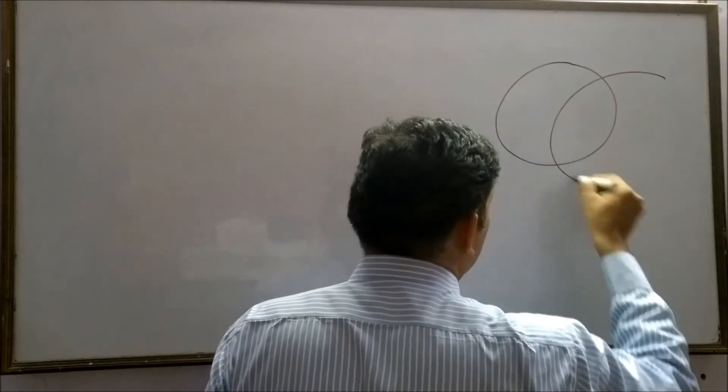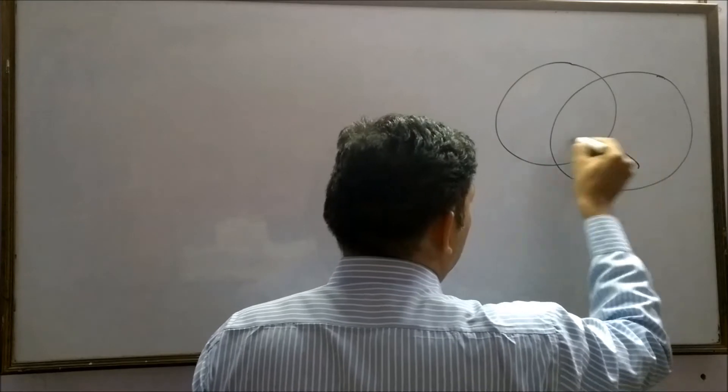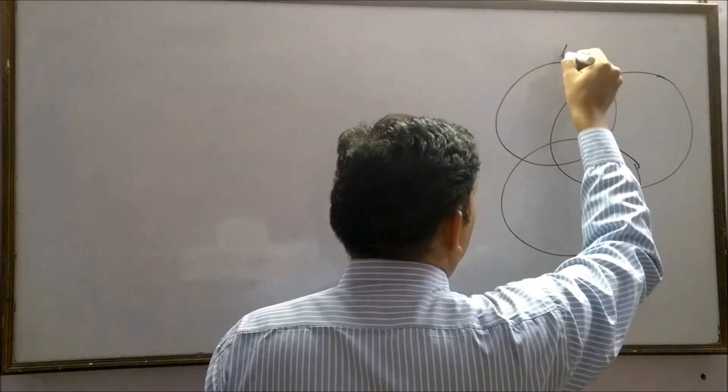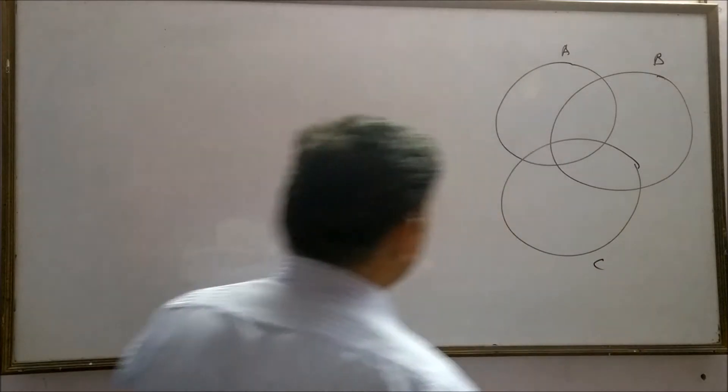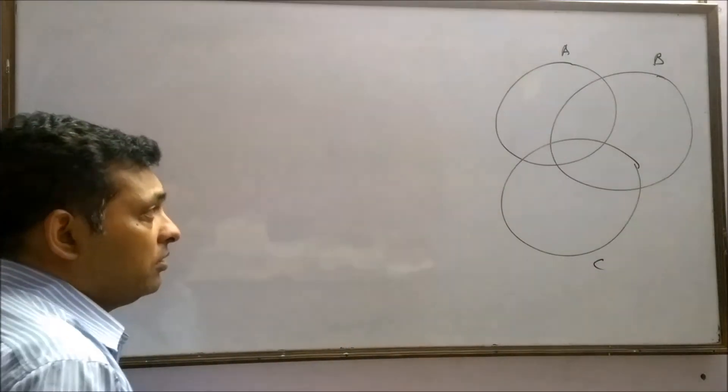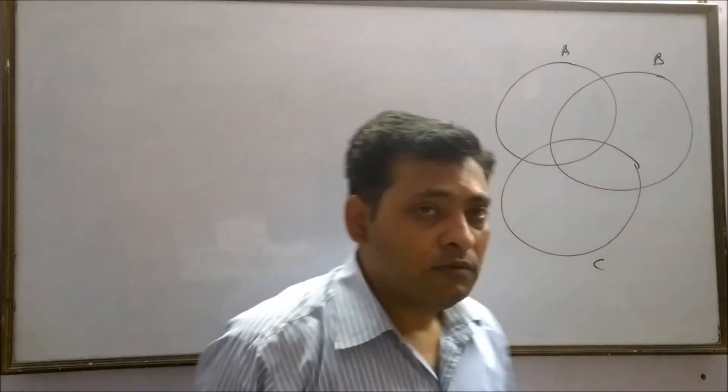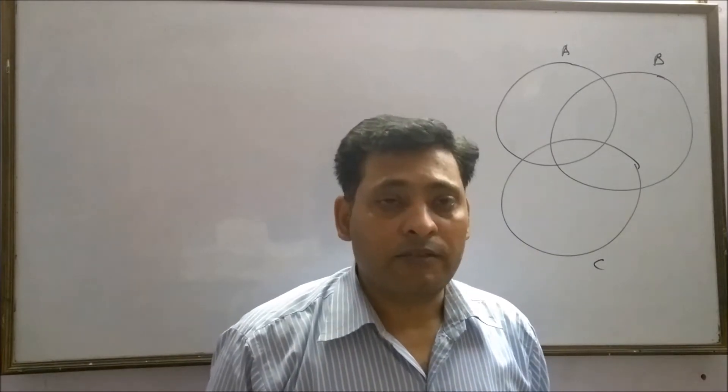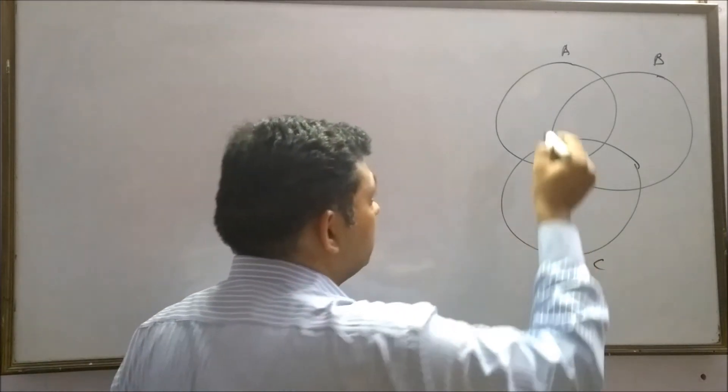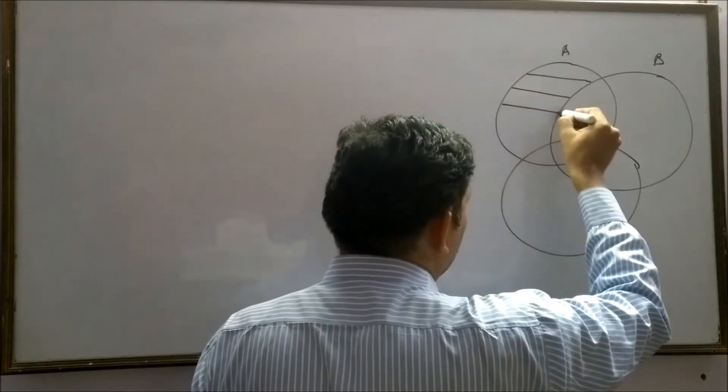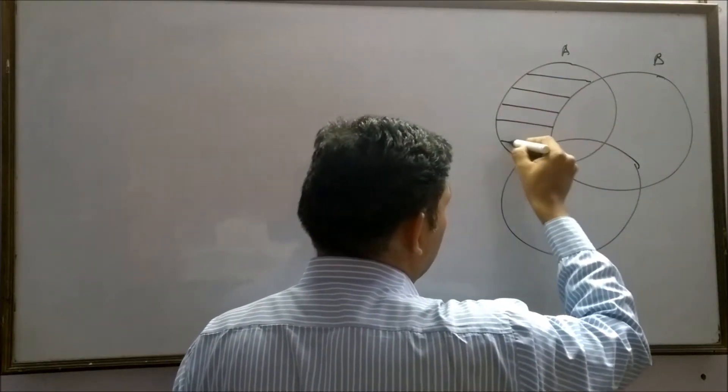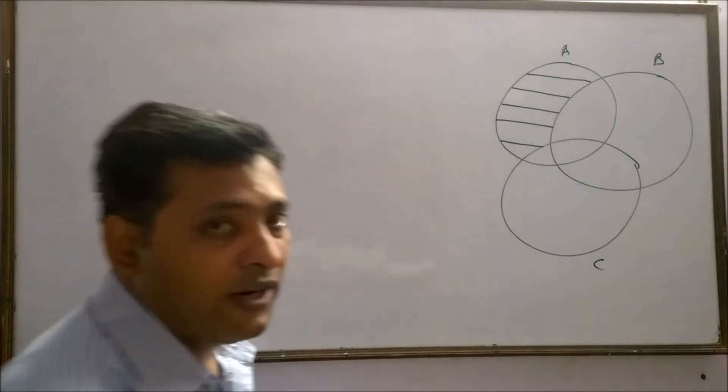There are three sets A, B and C. And if you want exactly A, it means this shaded region is exactly A. How can we find it?